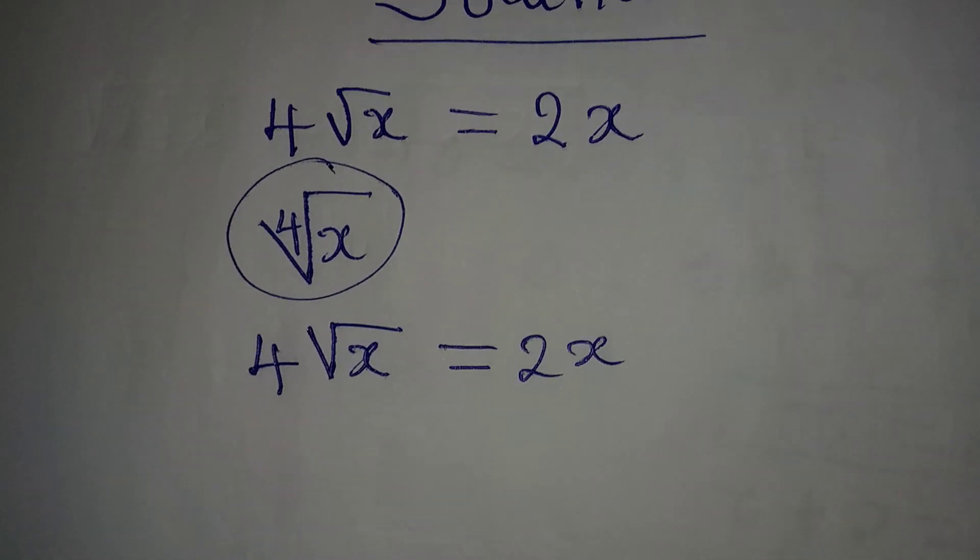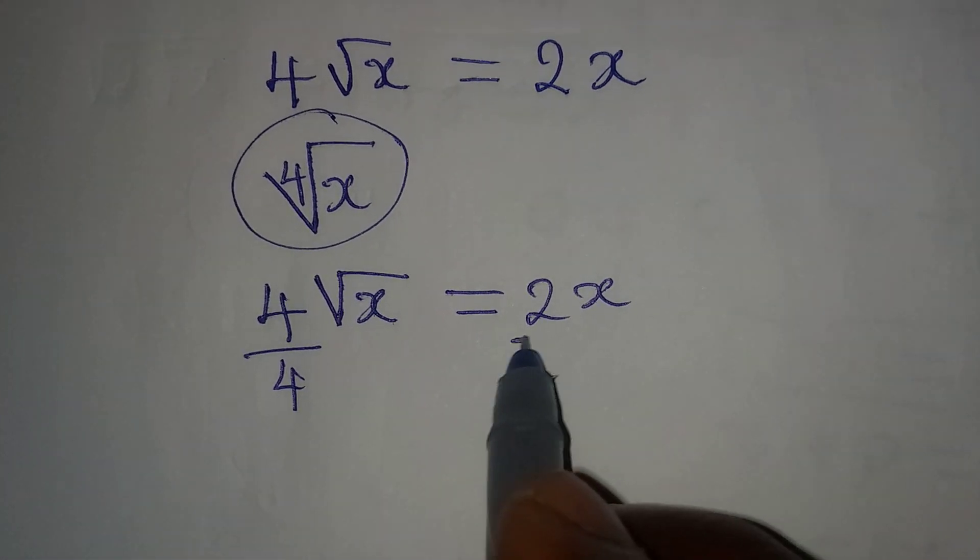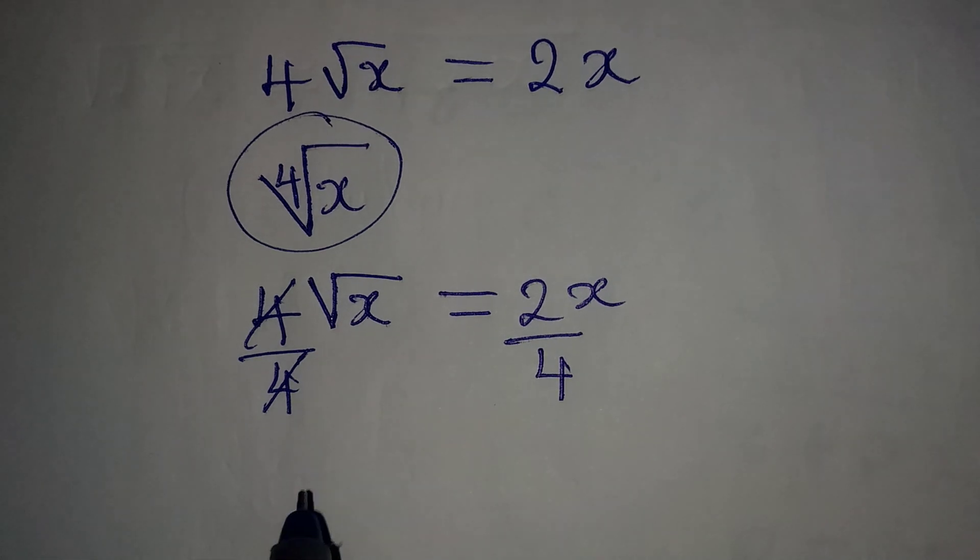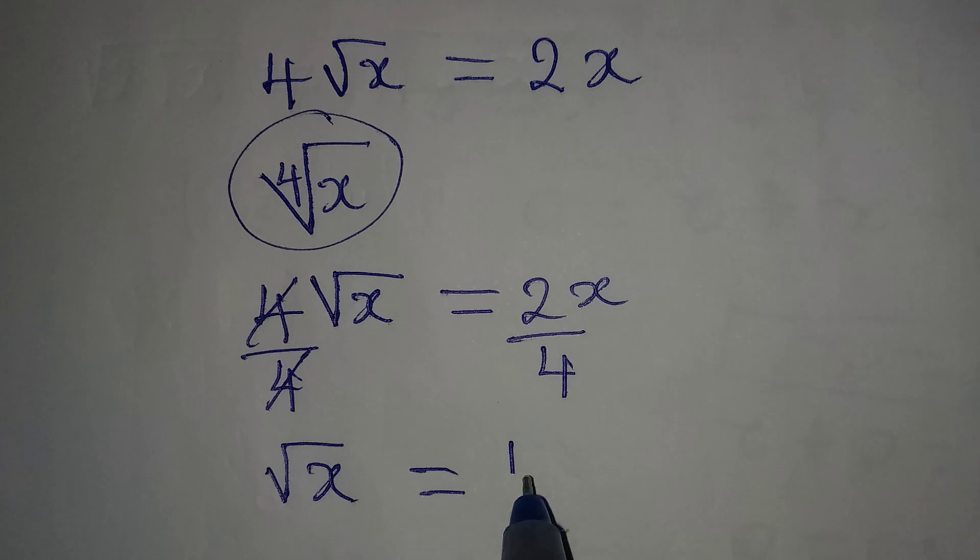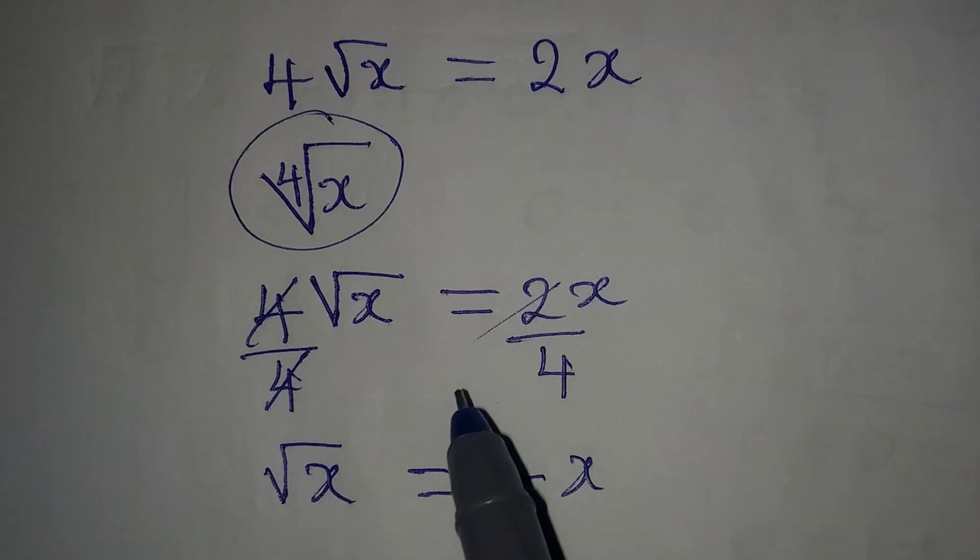What are we expected to do? Divide by 4. This will go with this, and then √x = 1/2 x, because 2 will go here one time and it goes here two times.